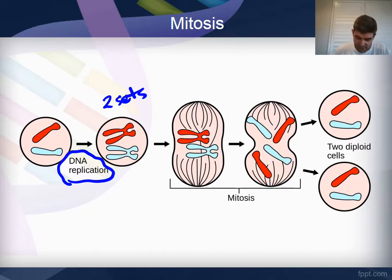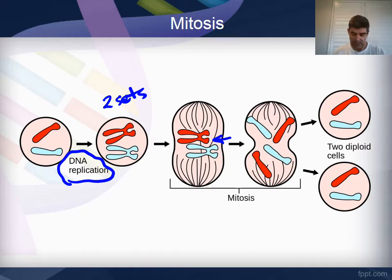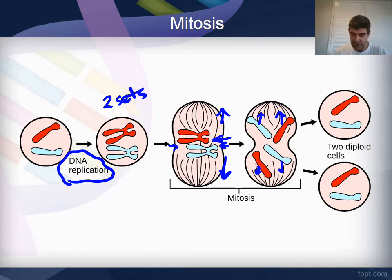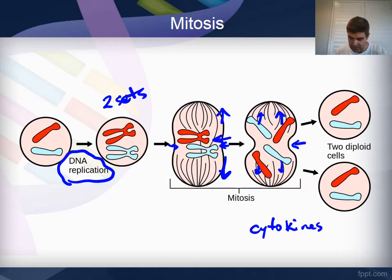Once DNA replication occurs, there are two full copies — these are chromosomes that have become joined so that we have double sets. They line up along the equator, or center, of the cell and start to move away towards the poles. You can see that this separation has started to occur with one part of each pair moving off in different directions. Once the chromosomes are located in the two different polar regions, the cell starts to divide and split in half through a process known as cytokinesis, and we get left with our two daughter cells.